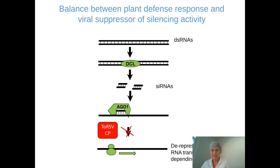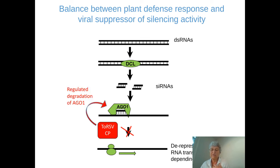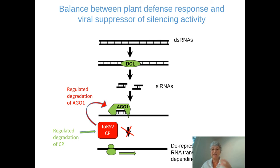We now have an updated model showing AGO1-dependent translation repression of viral RNA, but now also the ToRSV coat protein that prevents this mechanism and re-allows viral RNA translation. As I said, this is not a very efficient mechanism, so there is a balance between silencing suppression and silencing. One way the ToRSV coat protein achieves this is by using the plant degradation machinery to regulate the degradation of AGO1. We also have evidence that the plant counteracts by performing regulated degradation of the coat protein. So it is a very highly regulated mechanism.